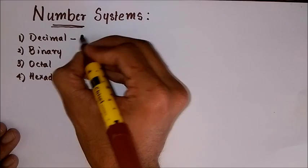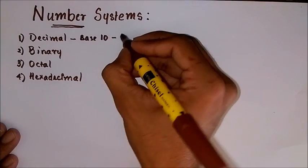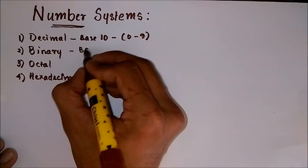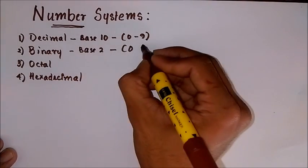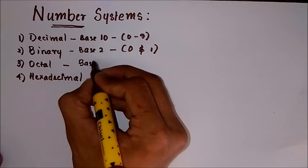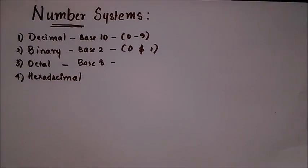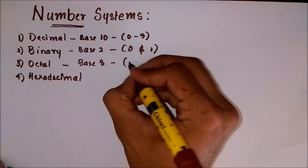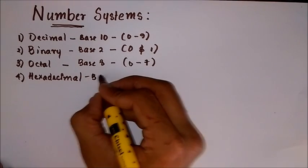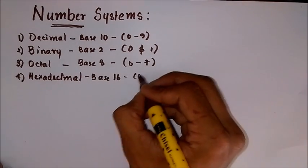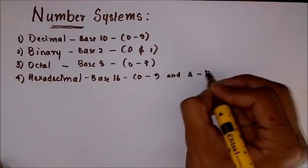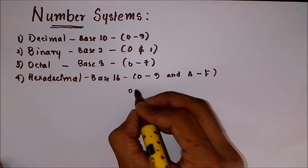Decimal has base 10 and uses digits 0 to 9 to represent numbers. Binary has base 2, therefore only two values: 0 and 1. Octal has base 8 and uses 0 to 7, that is 8 digits. Hexadecimal has base 16, therefore 16 characters which are 0 to 9 and then A to F.